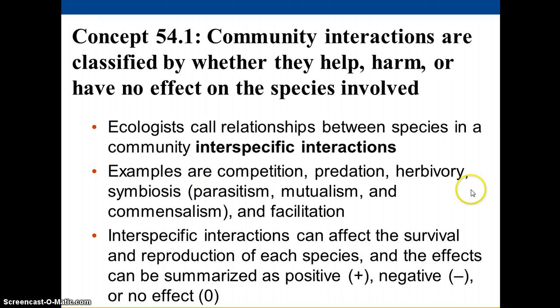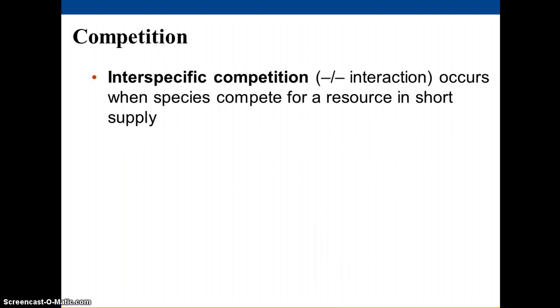As you can see here: competition, predation, herbivory, and various types of symbioses. These interactions between species can be described as being positive for one or negative for the other, positive for both, or having no effect. For example, competition between species is where they are both having a negative effect on each other.